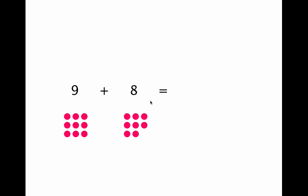Here's one more. 9 plus 8. Again, we have 9 dots plus 8 dots, and that gives us 17 dots. So our sum is 17.